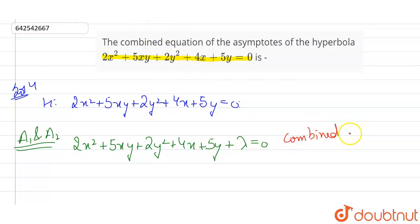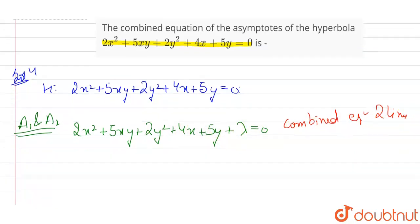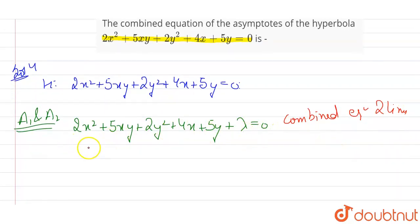Combined equation of asymptotes or we can write it at two lines, right? And the required condition says that this equation is what? If the two lines are straight, these are two lines, then their delta will be 0.